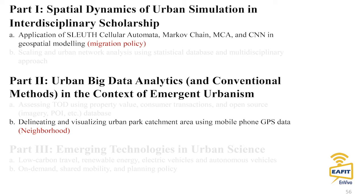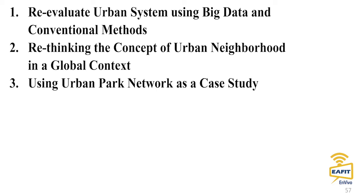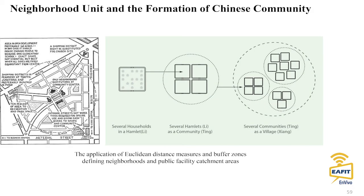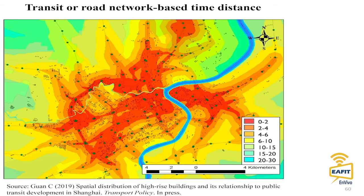The second part of the research applies urban big data. The example I use is mobile phone data, though there are other opportunities to combine individual-level data — which is a real benefit for researchers this decade compared to ten years ago. This allows us to re-evaluate urban systems using urban big data and re-examine the concept of urban neighborhood. There are different ways to measure distance: Euclidean, network, real-time — and the concept of neighborhood was derived from Euclidean distance-based concepts in the 1920s.